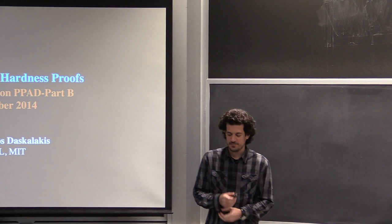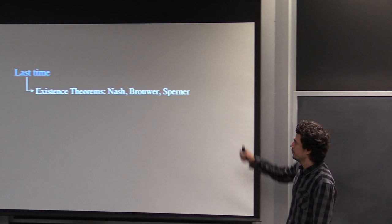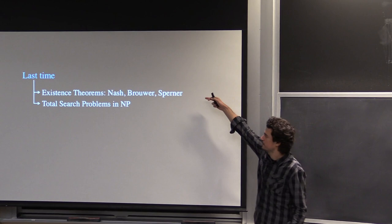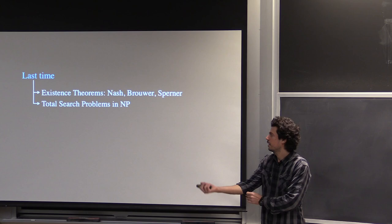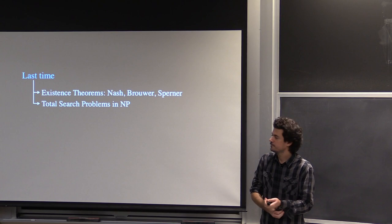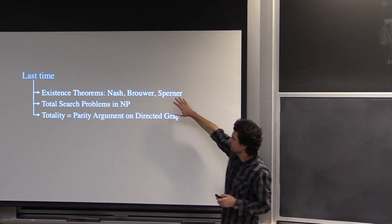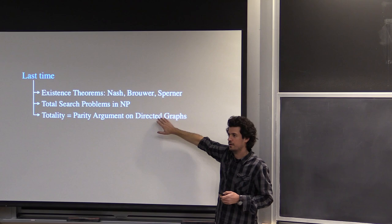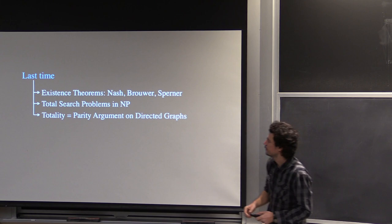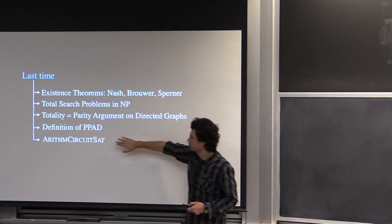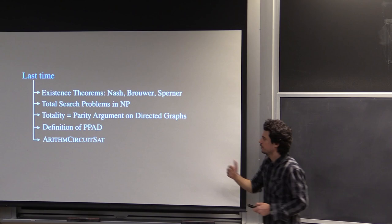Let me remind you what we did last time. I talked about interesting theorems in topology — Nash, Sperner, and Brouwer — and defined the corresponding search problems. Because of those existing theorems, the corresponding search problems were total. Then I looked into problems in NP that are total and tried to identify what makes them total.